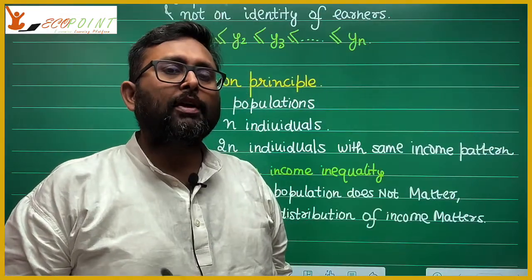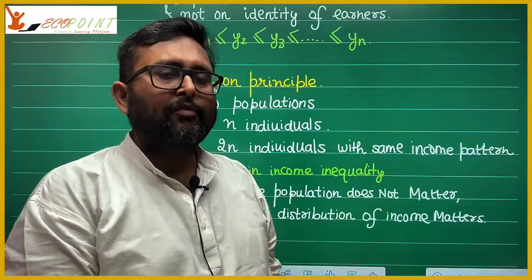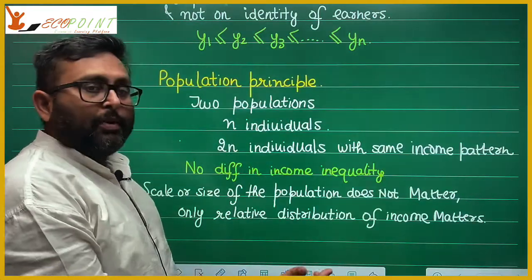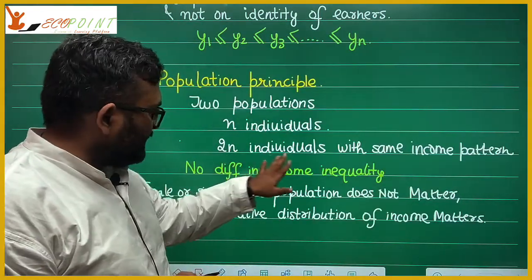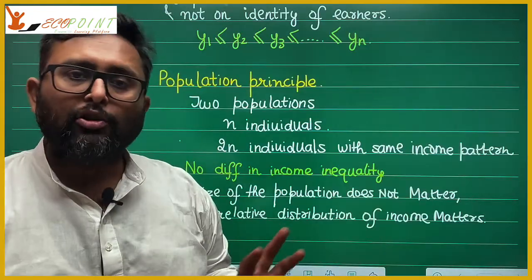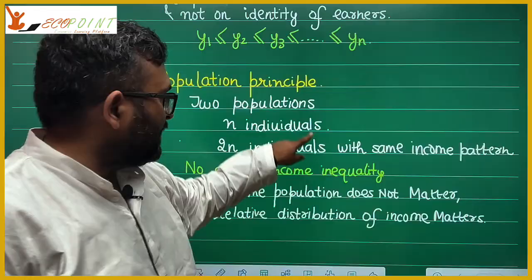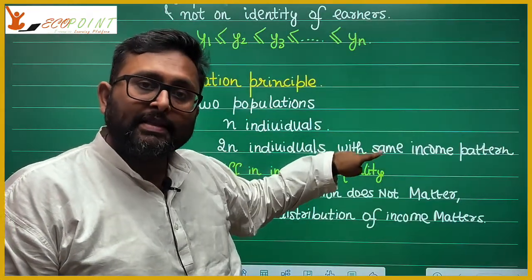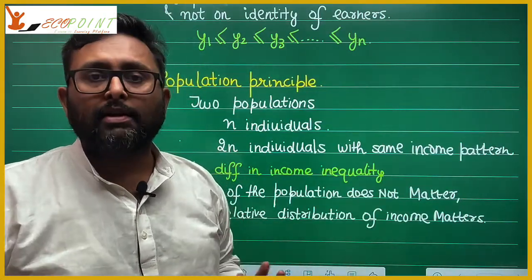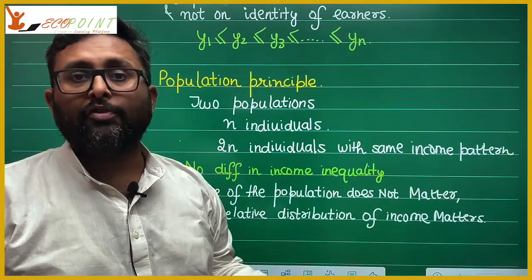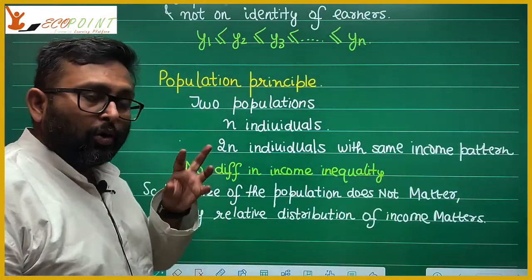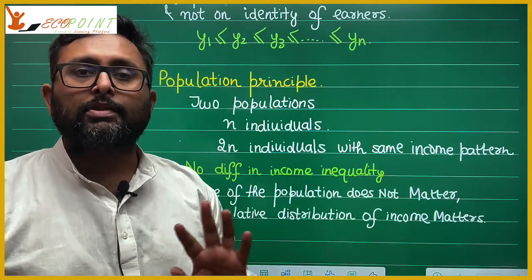The second principle is the population principle. Suppose you have two populations. In one population you have some individuals — say 10. You clone this population so it becomes 20 individuals with the same income pattern. The income inequality that existed in the first population remains the same as in the doubled population. The size of the population doesn't matter. What matters is the relative proportion of income distribution.